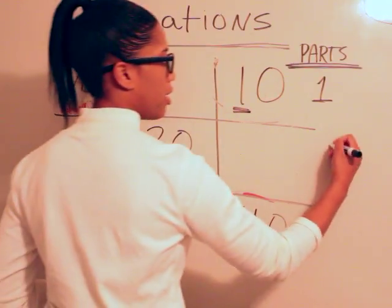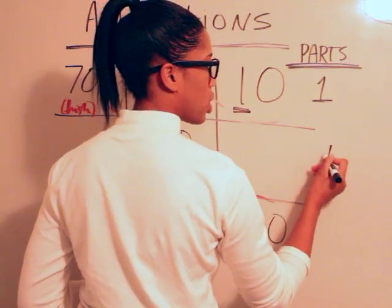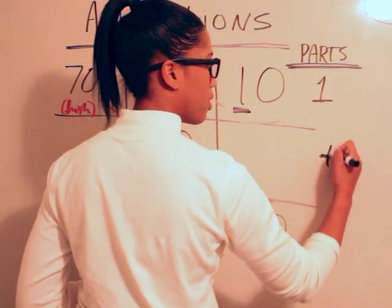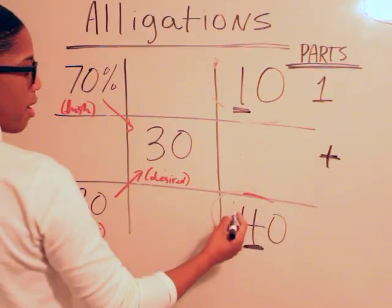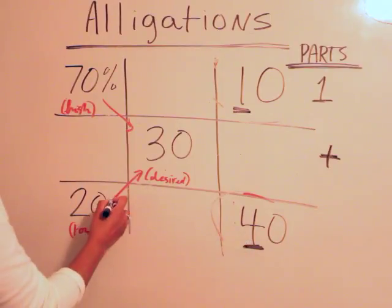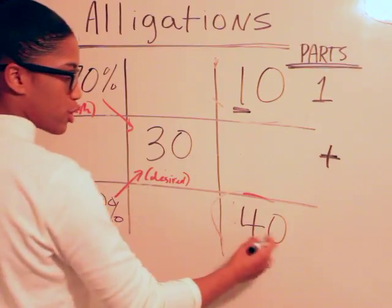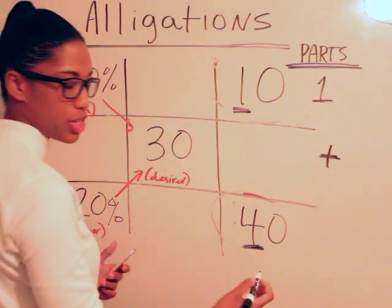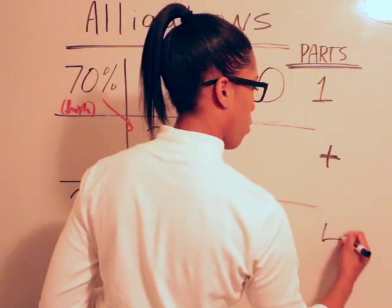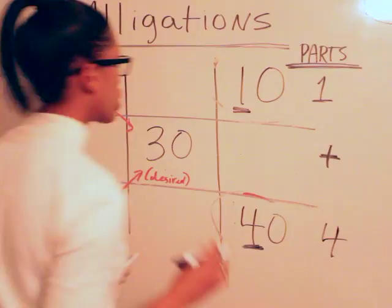It's going to be one part 70%. And if just in case we want to get the total parts, we'll go ahead and add it. And we'll say four parts of the 20%. There's 40 right there, but you just take the first digit. So it's four parts 20%.